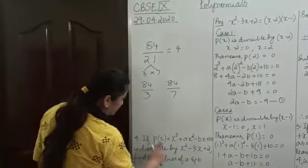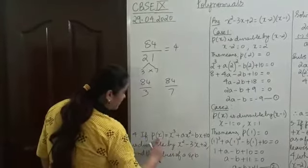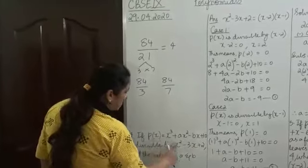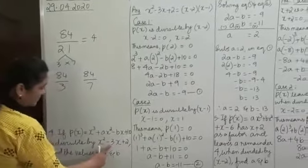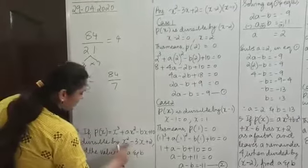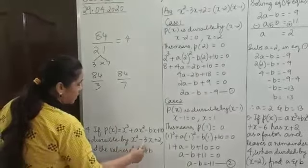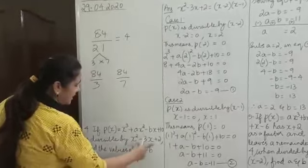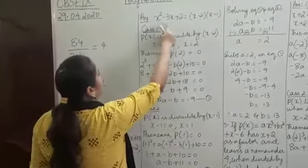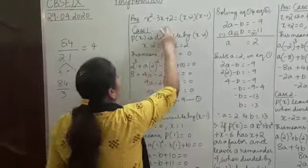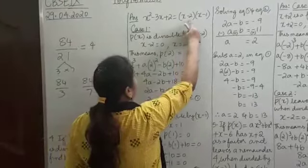Similarly, if P of X is exactly divisible by this polynomial, then P of X will also be divisible by the factors of this polynomial. We factorize the quadratic because the remainder theorem requires linear factors. X squared minus 3X plus 2, by splitting the middle term, gives factors X minus 2 and X minus 1.